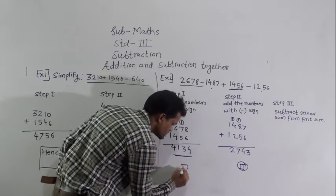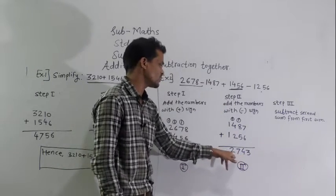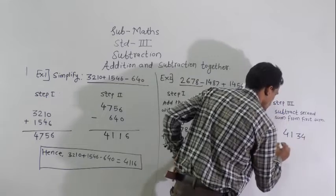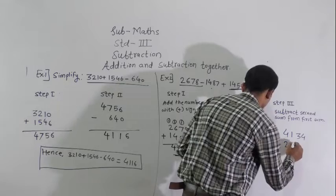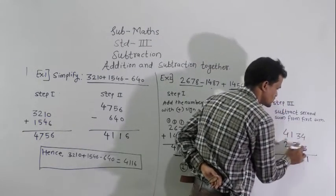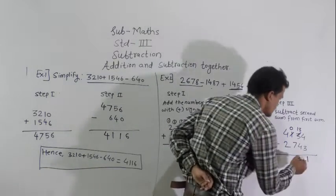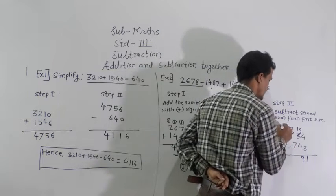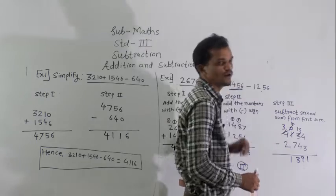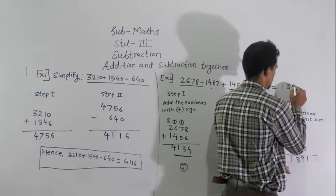Now the next step is to subtract the second sum from the first sum. The second sum is 2,743 and the first sum is 4,134. Write 4,134 minus 2,743. Subtract: 4 minus 3 is 1. 3 minus 4 is not possible, so regroup: write 0, write 13 here, 13 minus 4 is 9. 0 minus 7 is not possible, cut the 4, write 3 here and 10 here, 10 minus 7 is 3. 3 minus 2 is 1. So 1,391 is the answer.